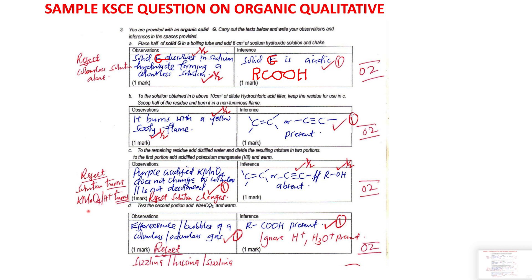You must mention the initial and expected final color which has not changed — that is, the purple acidified potassium manganate(VII) is not decolorized. The inference is: double bond, triple bond, and ROH are absent. Either mentioning double bond or triple bond and ROH absent will earn you full credit.